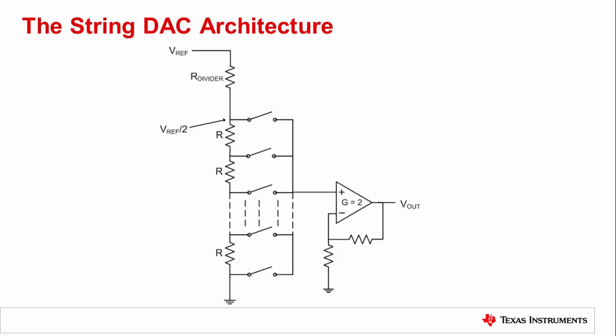As resolution increases, the number of resistors in the string DAC exponentially increases. In general, an n-bit DAC has two to the n resistors. As a result, the string DAC's size can have a tendency to get out of hand quickly, but there are segmented design tricks to overcome DAC size.